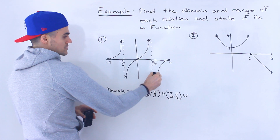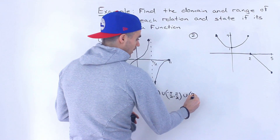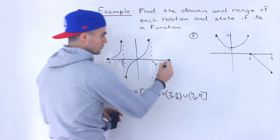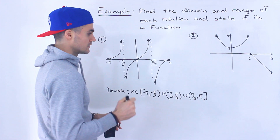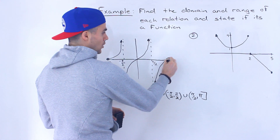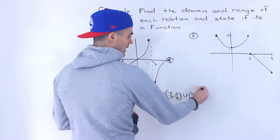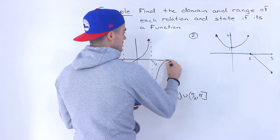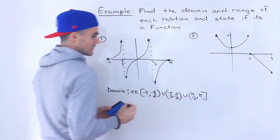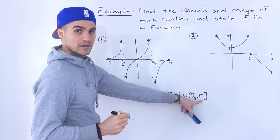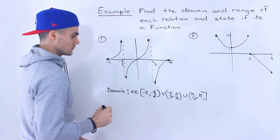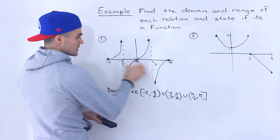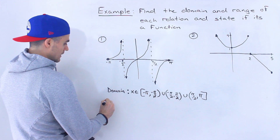We're also going from positive pi over two to positive pi, and it's inclusive of positive pi because that's a solid dot there. Now if this was an open dot, that would be a round bracket, but because it is indeed a solid dot at positive pi, that's a square bracket — it's inclusive. So that is the domain: these three interval sections.